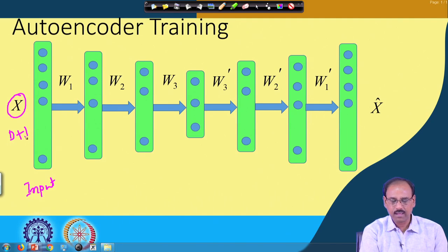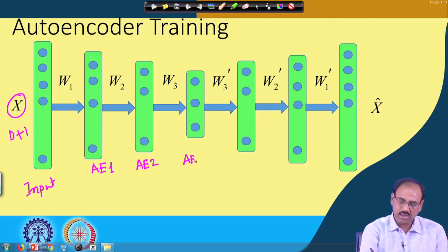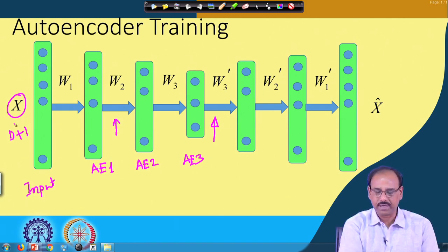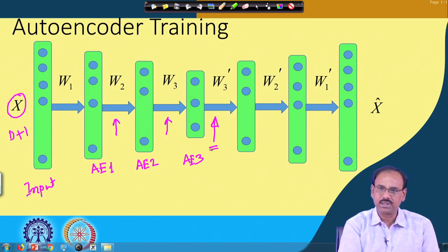We have a number of autoencoders: autoencoder 1, autoencoder 2, autoencoder 3, and so on. In this configuration, the coded output — the reduced-dimensional or latent space representation — is obtained at the output of autoencoder 3. Each autoencoder gives a reduced-dimensional representation of the same input but at different levels. The output of autoencoder 1 is a coded version of input x, autoencoder 2 gives another coded version, and autoencoder 3 gives the point of maximal dimensionality reduction.